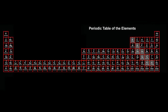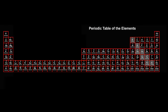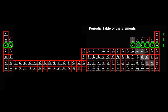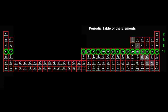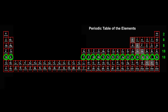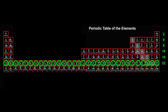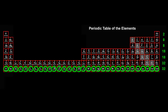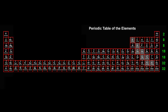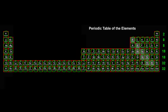This layout also makes it easier to see how many elements are in each row: 2 in the first row, 8 in the second, 8 in the third, 18 in the fourth, 18 also in the fifth, 32 in the sixth, 32 in the seventh. Altogether, there are 118 elements.